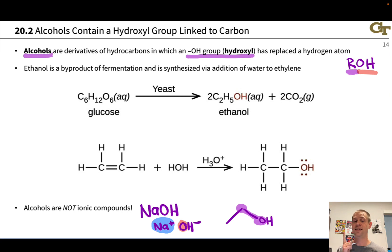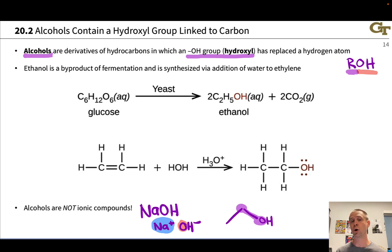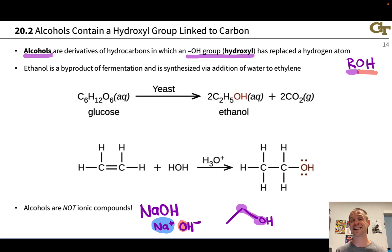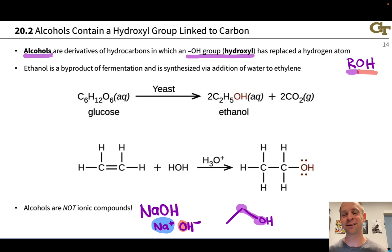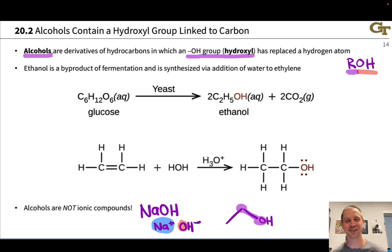That said, the hydrogen in the OH group is mildly acidic, and that can be an important mode of reactivity for alcohols: deprotonation — proton transfer from the OH group — creating a negatively charged oxygen in the conjugate base. But it's not even that acidic; it takes a pretty strong base to remove that proton.